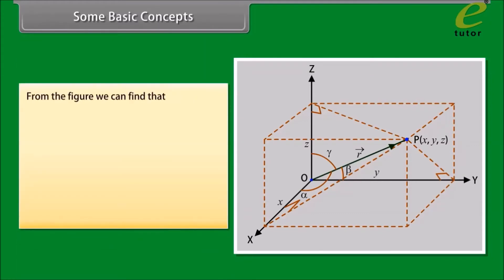From the figure we can find that cos alpha equals X by mod of vector R, cos beta equals Y by mod of vector R, cos gamma equals Z by mod of vector R.